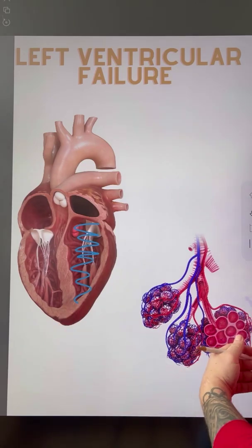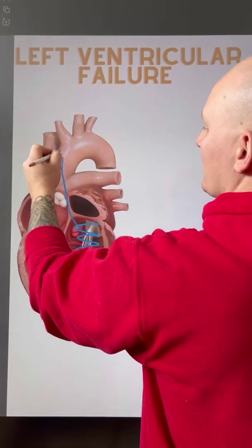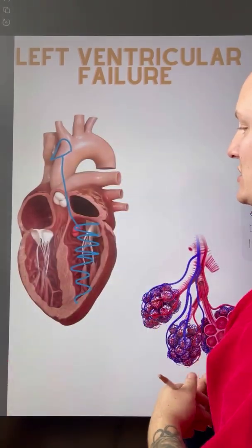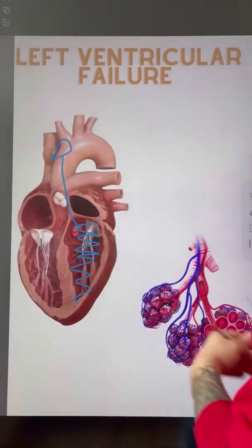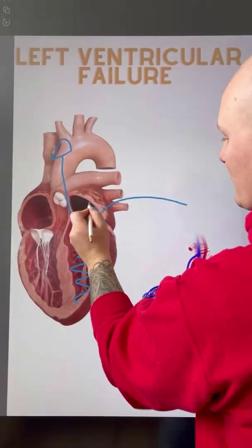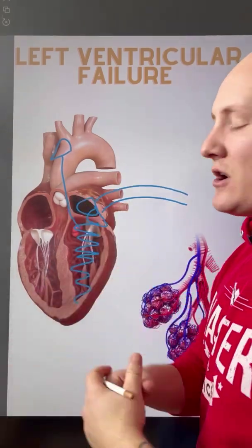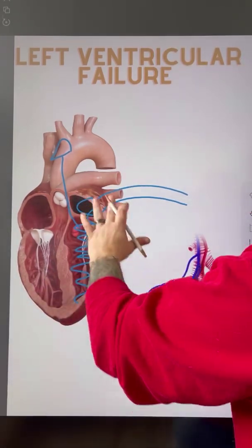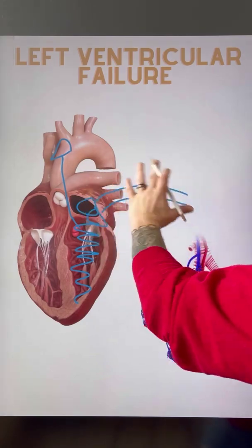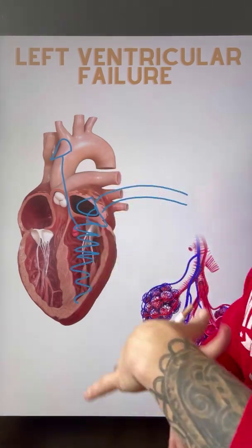When this left ventricle fails, it means that blood is not able to move nearly as effectively through the aorta to be pumped through systemic circulation. But here's the thing: we still have blood moving towards this left ventricle from the alveoli, because we need to move blood in order to oxygenate it. But if this left ventricle is failing, it means that the flow is actually going to be decreased, increasing the pressure.